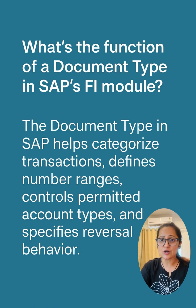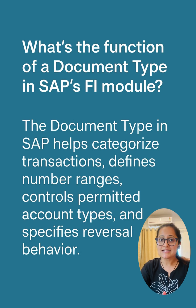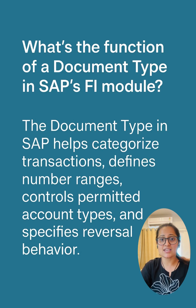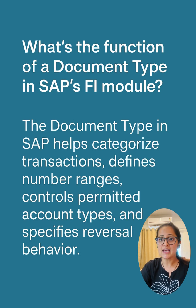Third, to define if a document can be used in batch input. Fourth, to set the reversal document types. For example, KR is used for vendor invoice and SA is a general posting. It's a key control point for how SAP interprets and processes transactions.